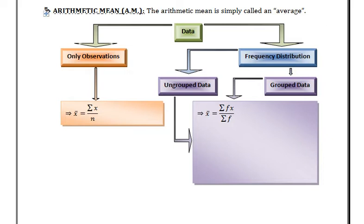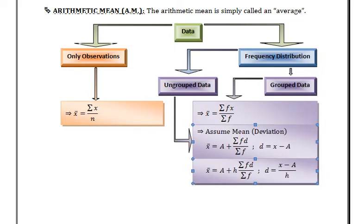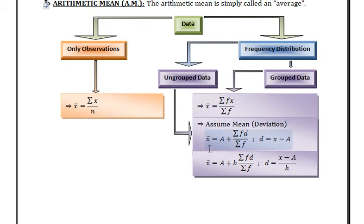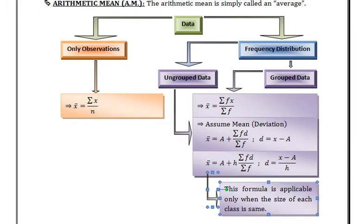We can also find mean using deviation, or the assumed mean method. The first formula is x-bar equals A plus summation fd upon summation f, where deviation is x minus A. The second formula is x-bar equals A plus h times summation fd upon summation f, where deviation is x minus A upon h. The second formula is applicable only when the size of each class is the same, meaning when we can find a common difference h.